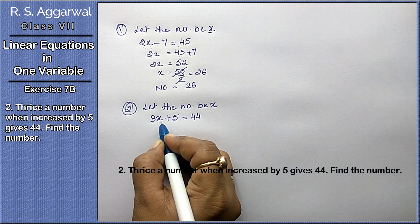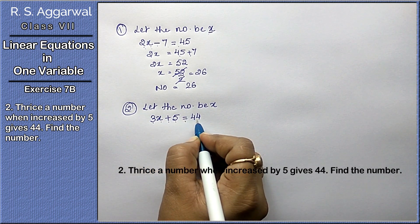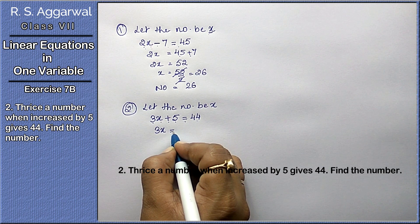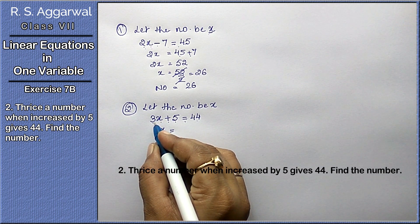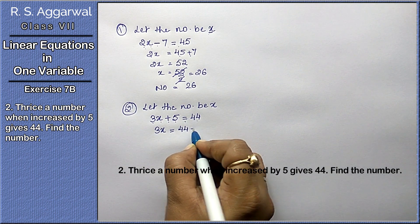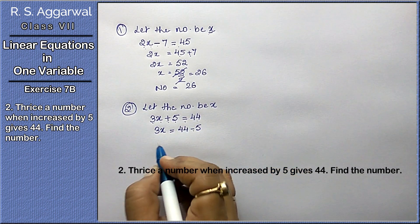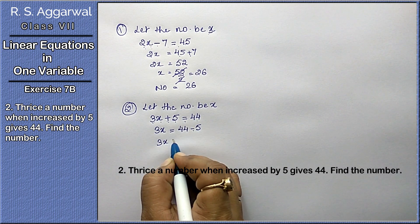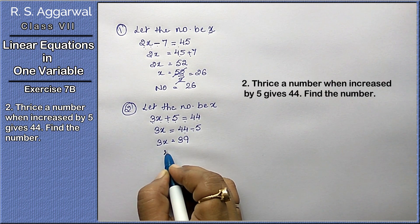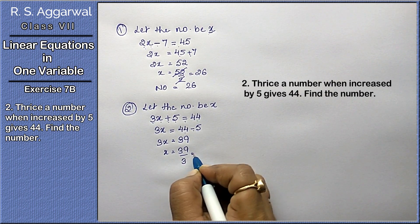When increased means plus by 5. The number will give you 44. Thrice a number means 3 times the number, 3x. When increased by 5 will give you 44. Similarly, 3x plus 5 equals 44. x terms on one side, non-x terms on the other side.